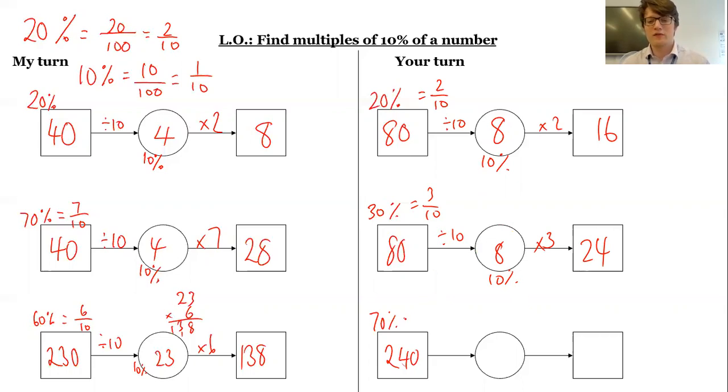70% of 240. Again, divide by the denominator, it's 24. Times by the numerator to get me to 70%. 24 times 7, I might just need a quick jotting. 7 times 4 is 28. 7 times 2 is 14, add the 2. So I get 168.